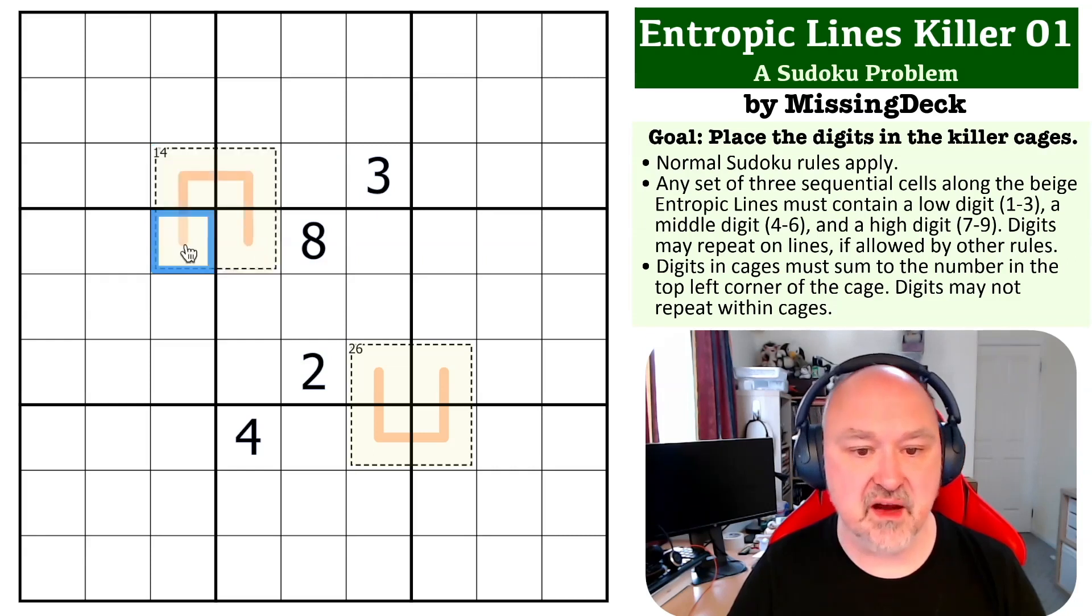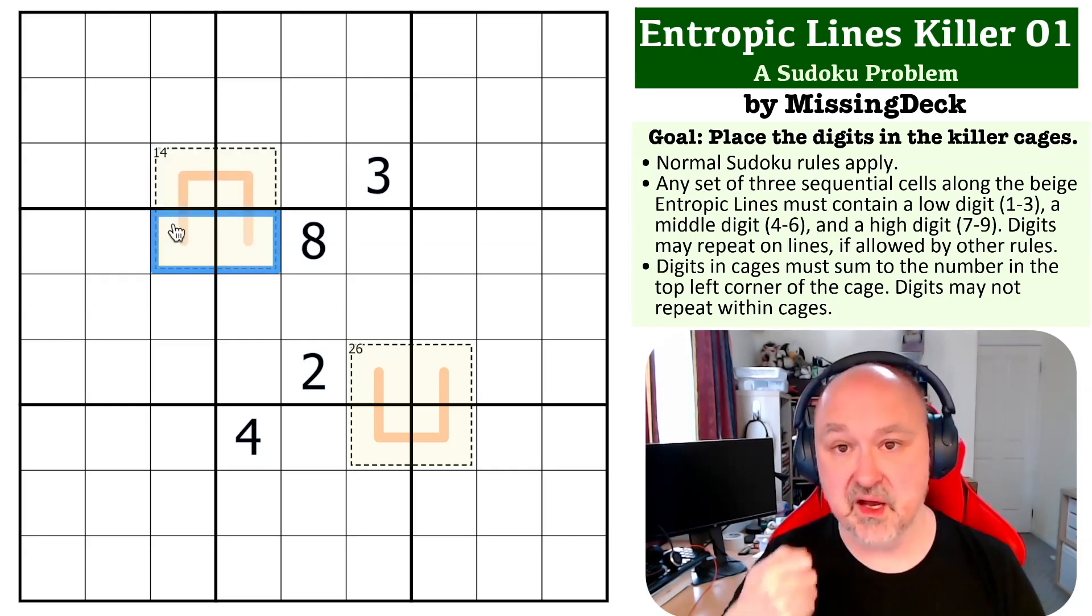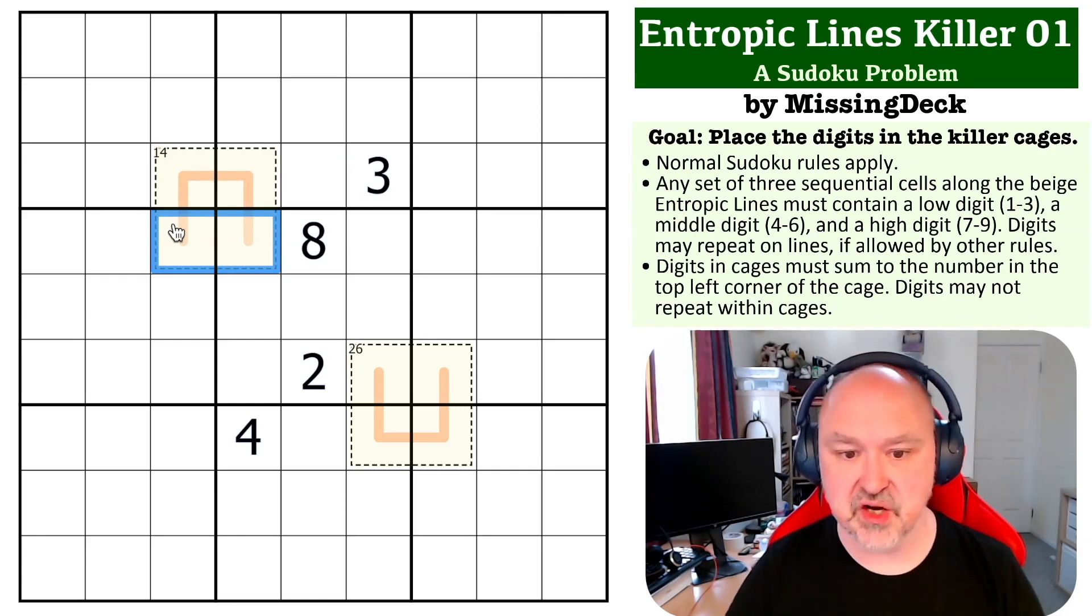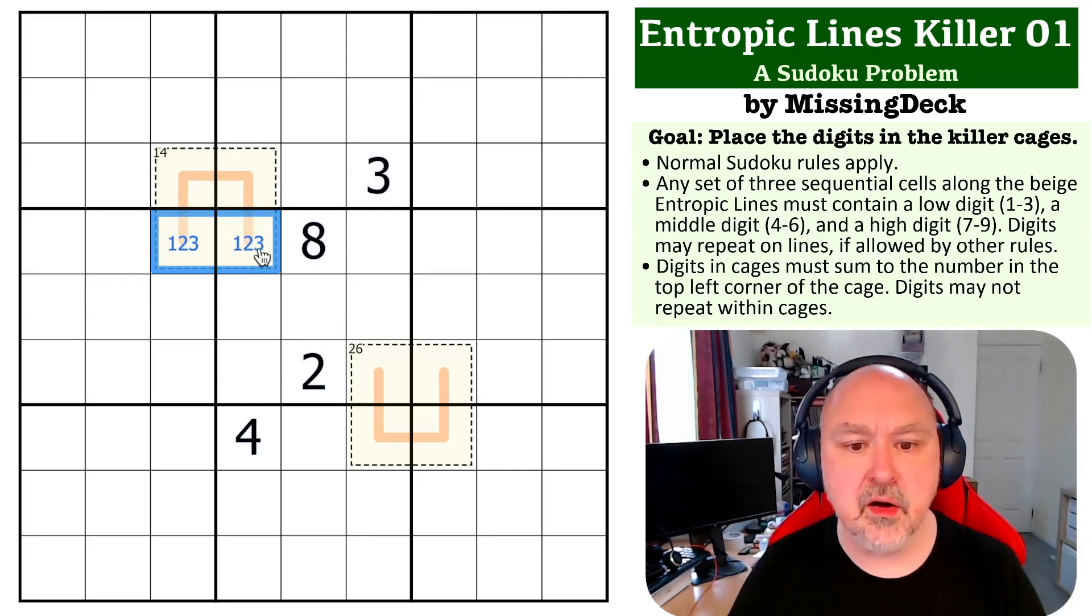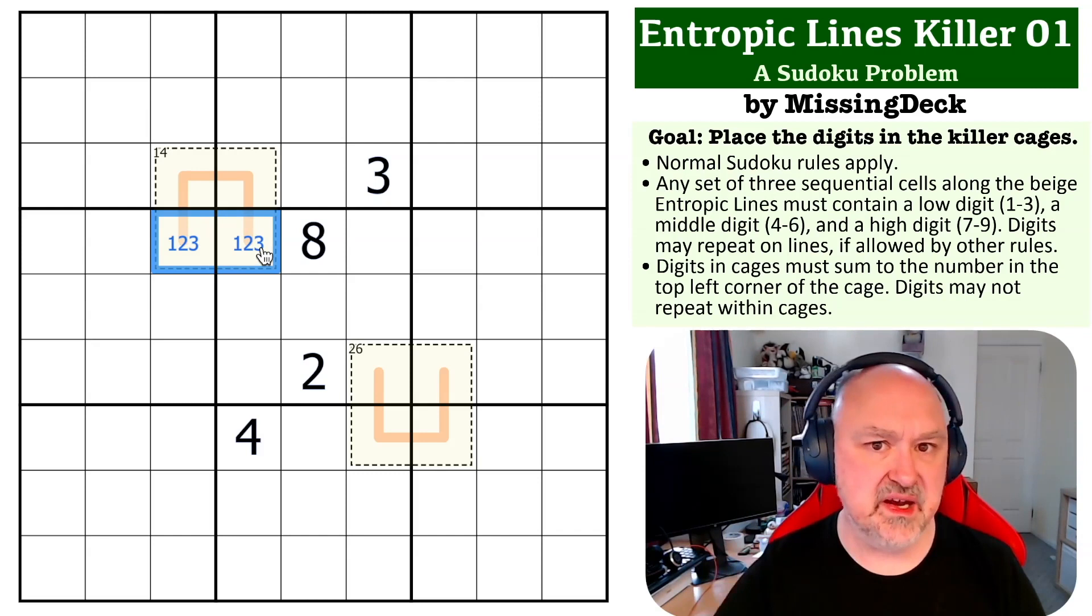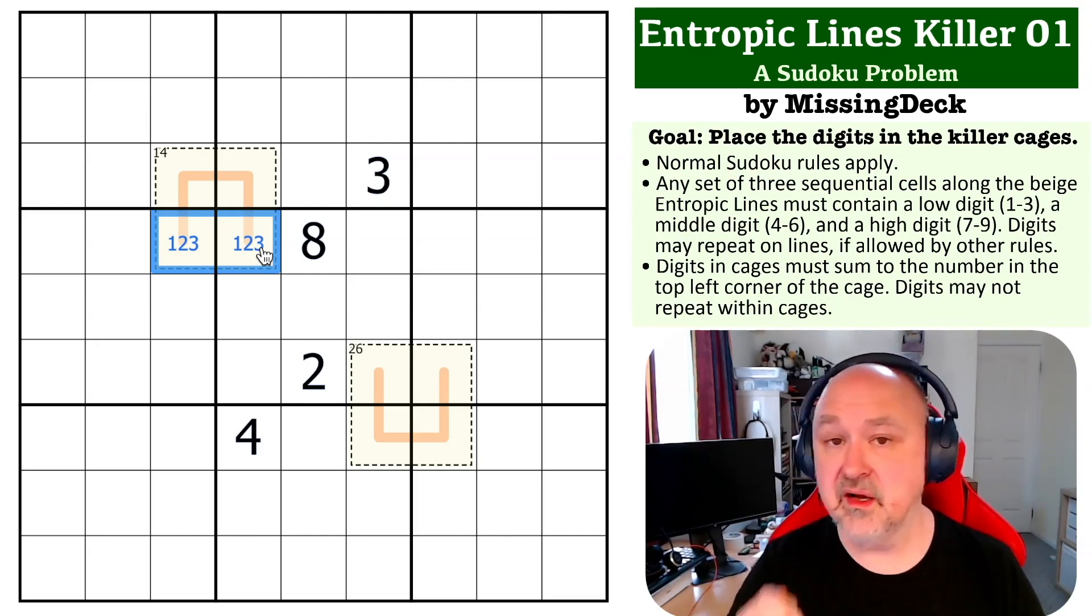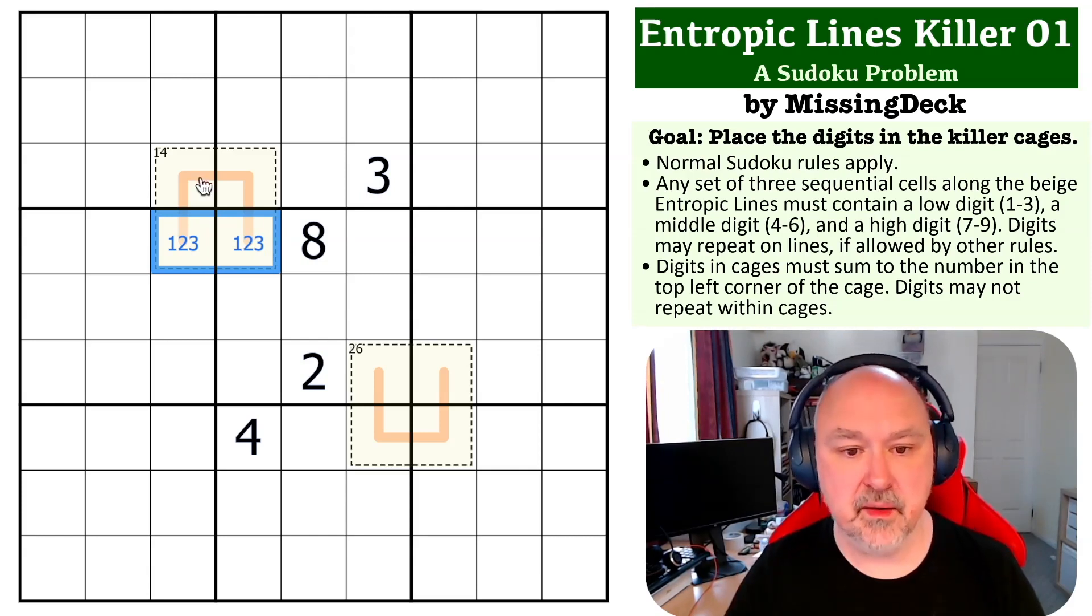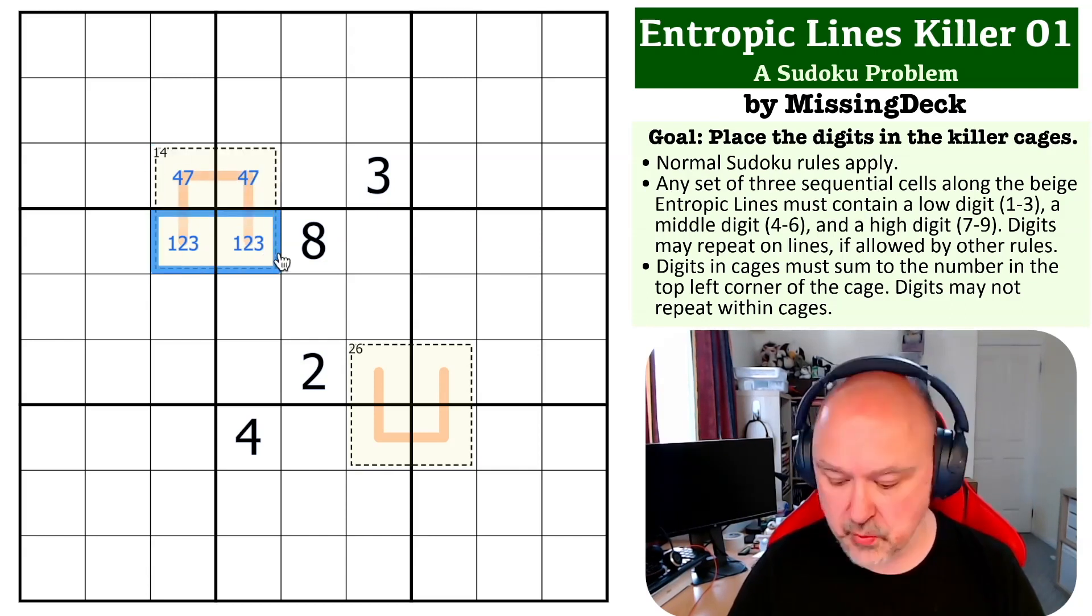Now, because of that, and the fact that I cannot repeat even a medium digit or a high digit, these two here must be the low digits. Once I've got two low digits, I still need to include a medium and a high digit. But the lowest medium and high digit I can put onto the line are four and seven. And if I add four and seven together, I get 11. If I put in four and seven, that only leaves three left, which are the two lowest low digits.